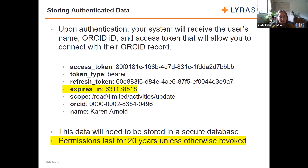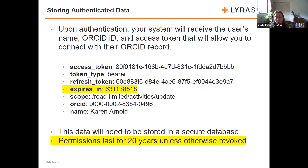Something interesting is that by default, when somebody grants these permissions, they last for 20 years. Unless that person revokes those permissions by clicking the trash can icon, or your organization revokes them for some reason, you'll be able to have these permissions on that person's ORCID record for 20 years. That's really helpful for tracking students after they leave the organization, for grant awards if you want to keep up with an awardee years after, or to see where faculty are going after they leave your institution.